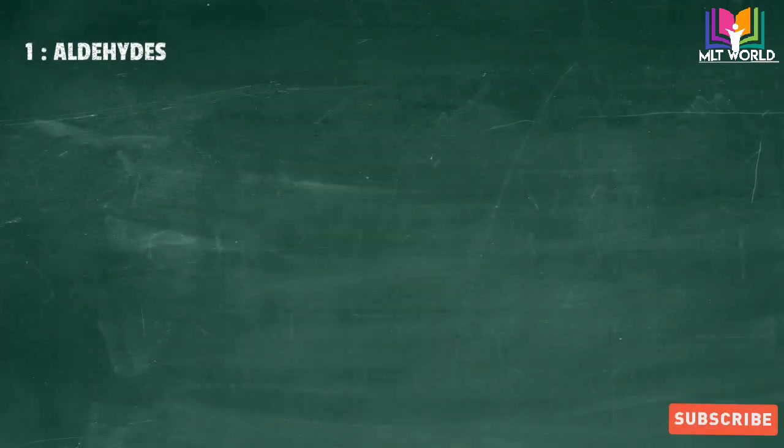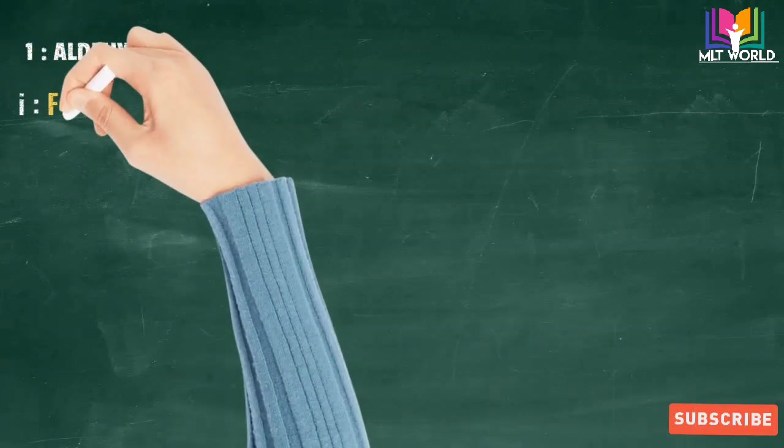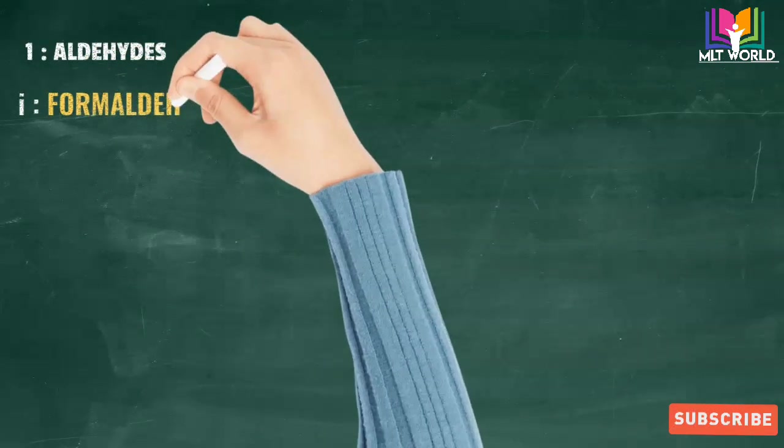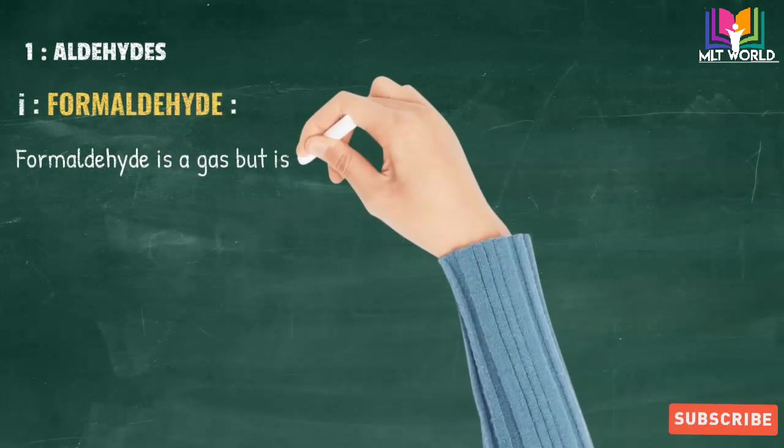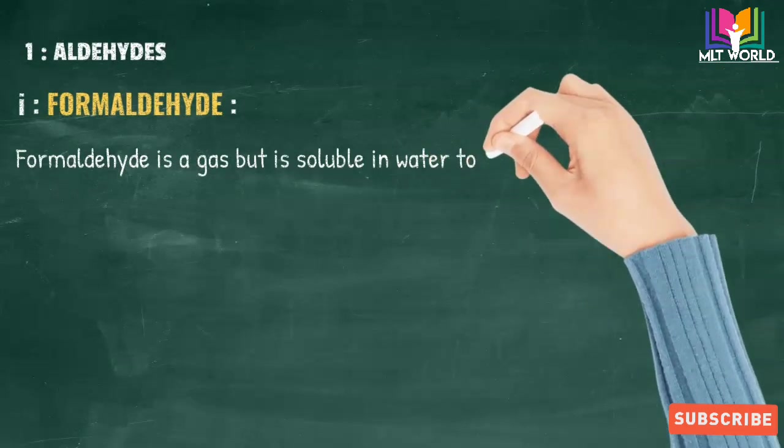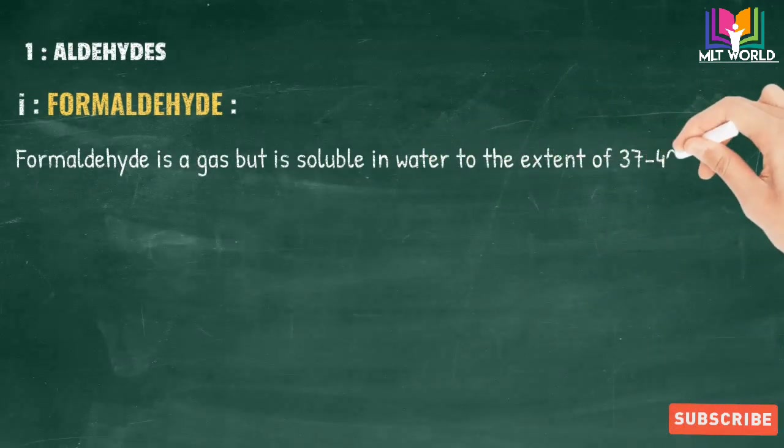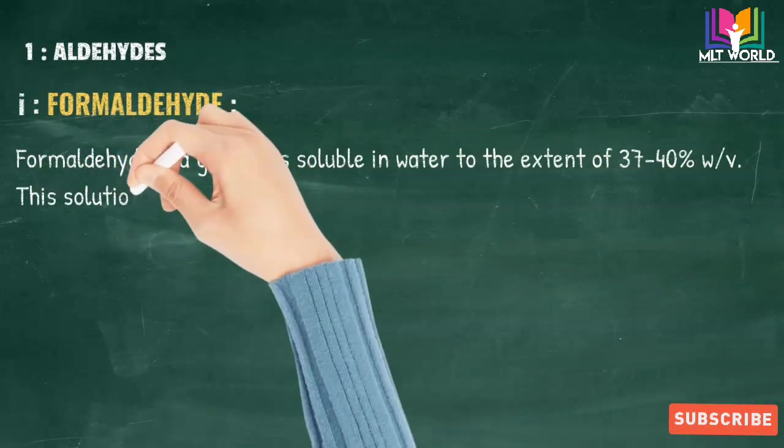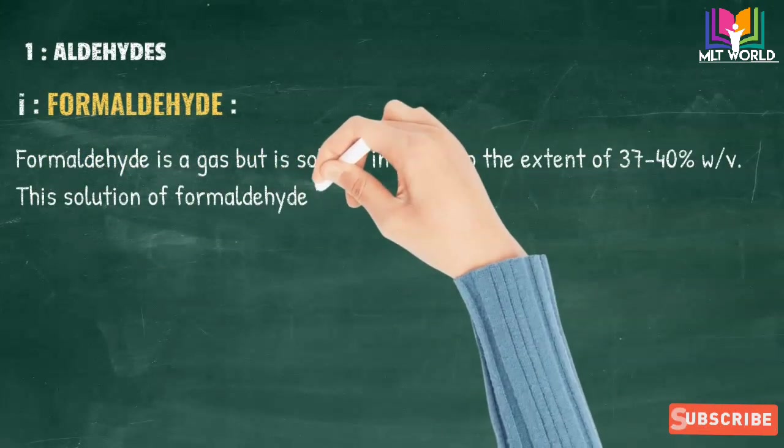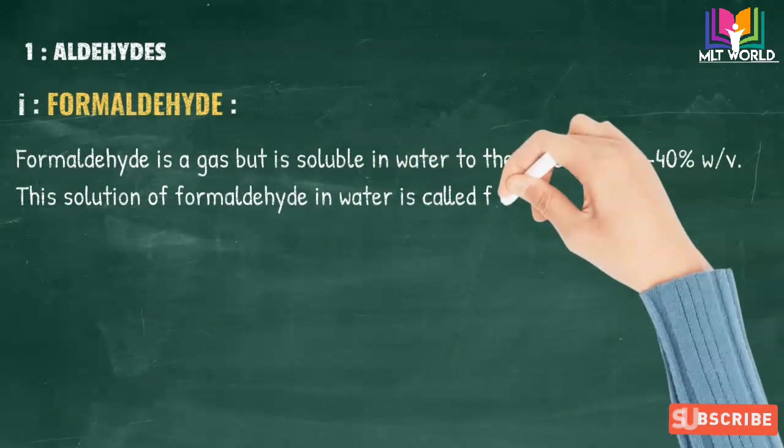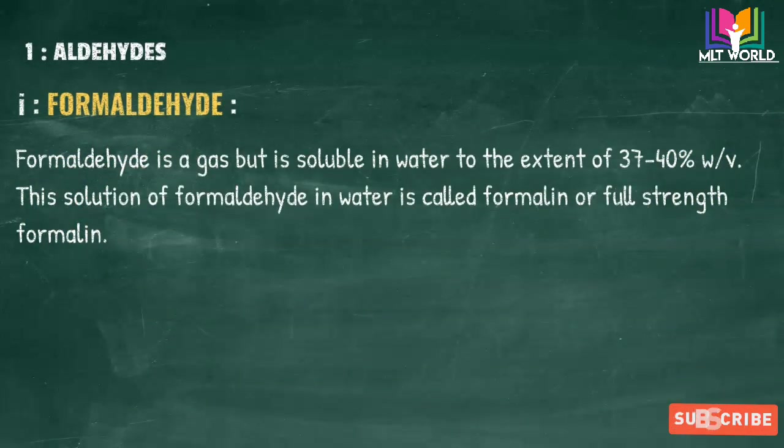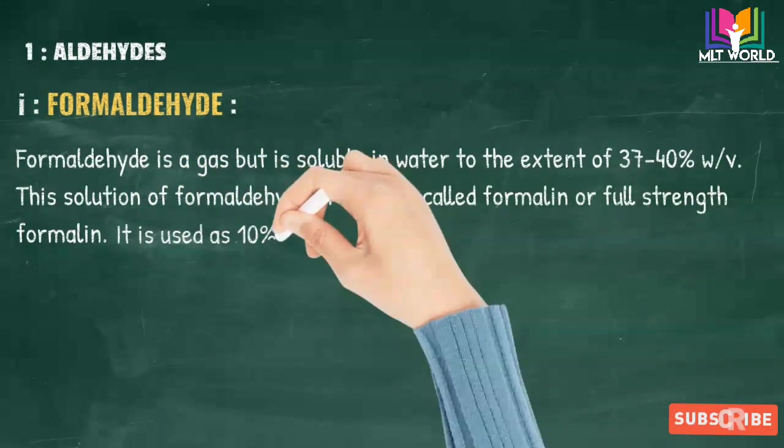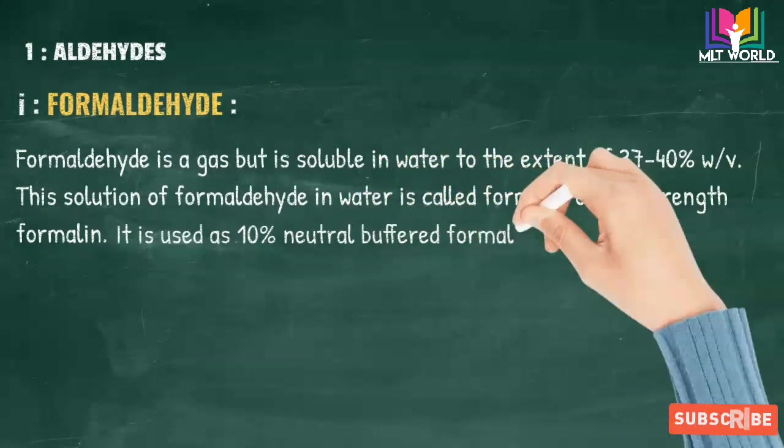First, the aldehyde group. The most common fixative used in histopathology from the aldehyde group is formaldehyde. It is normally used as 10% neutral buffered formalin. Formaldehyde is basically a gas but is soluble in water to the extent of 37 to 40 percent weight by volume. This solution of formaldehyde in water is called formalin or full-strength formalin.